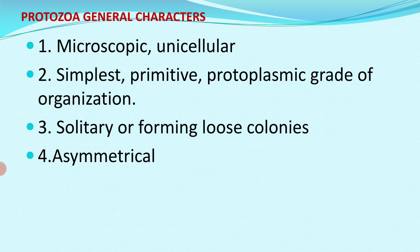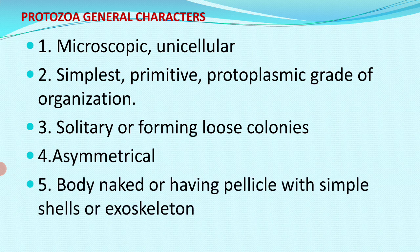When we see the body symmetry of these organisms, they are asymmetrical, but bilateral, radial, and spherical symmetry is also found in some protozoan organisms. The body may be naked or bounded by a pellicle, and this pellicle is often provided with simple shells.